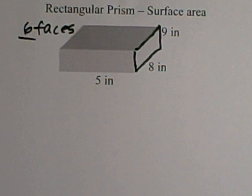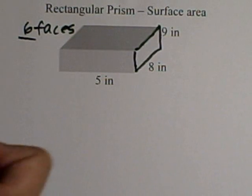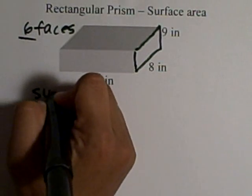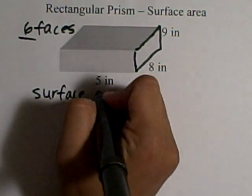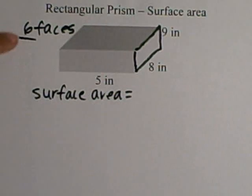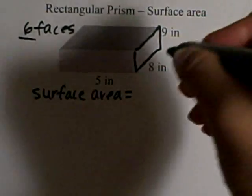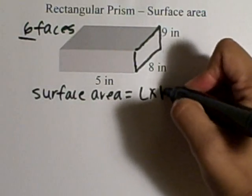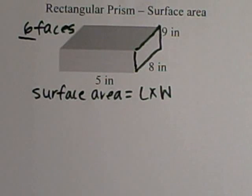We will need to keep that in mind as we solve for surface area. Okay, let's start. Surface area, by definition, is the area of six faces. Remember, area is just length times width. So we're going to be solving length times width for six faces.